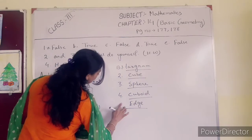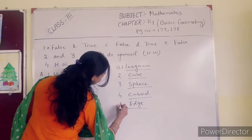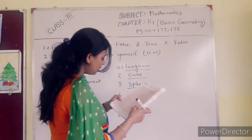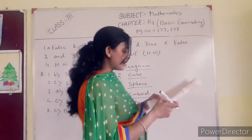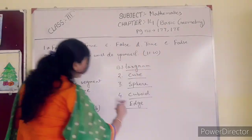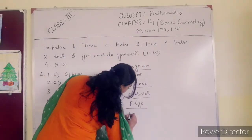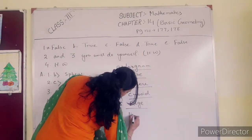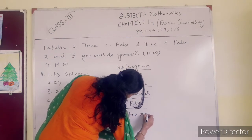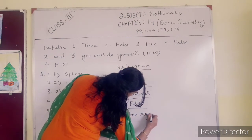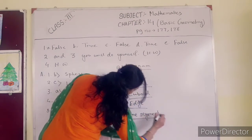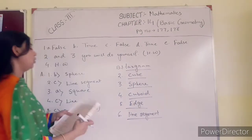Number 6: a line segment has two end points and has a definite length — so the answer is line segment.